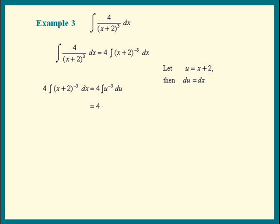Add 1 to the power and divide. We get u to the negative 2 divided by negative 2, plus c. This simplifies to negative 2 divided by u squared, plus c. The last step is to substitute the x's back in, and here's the answer.